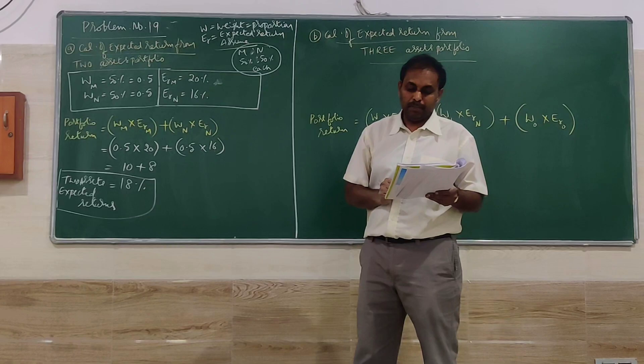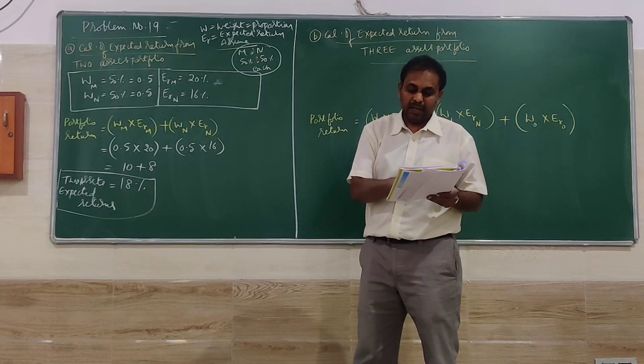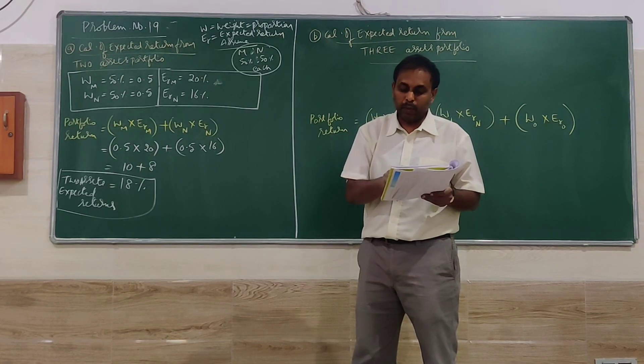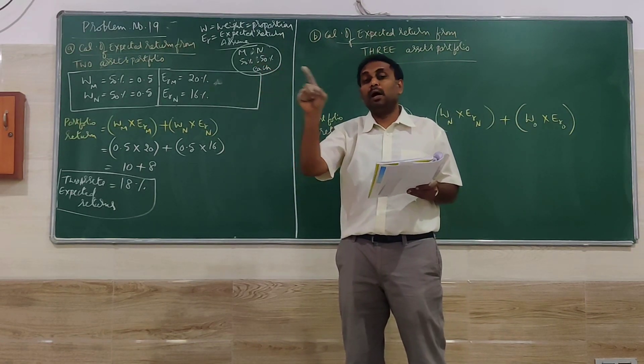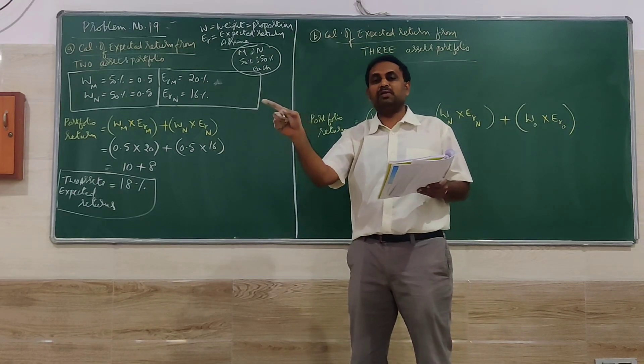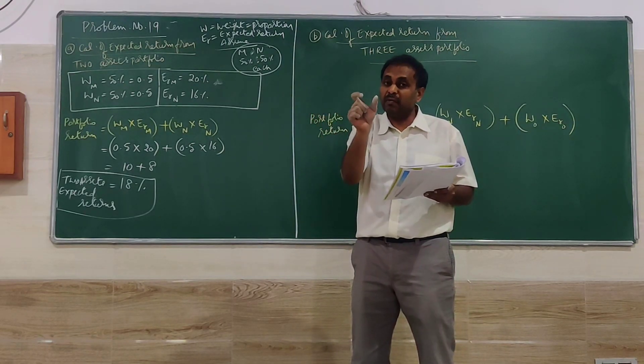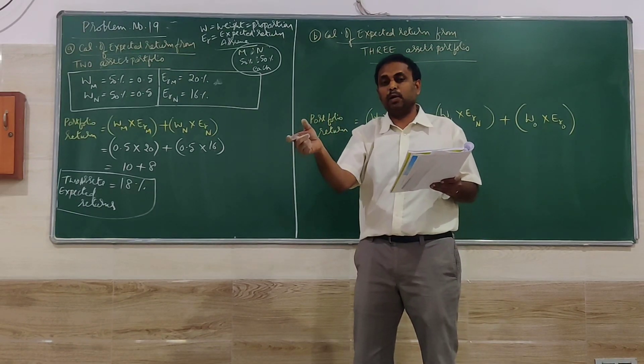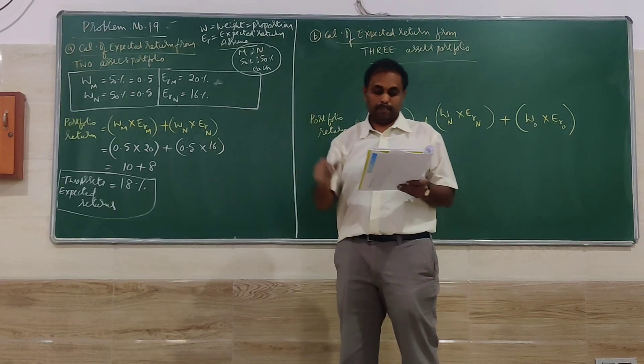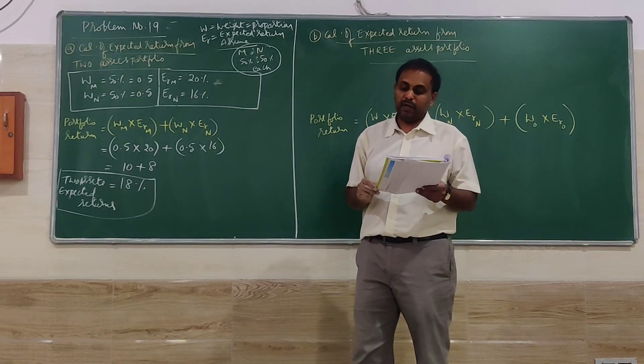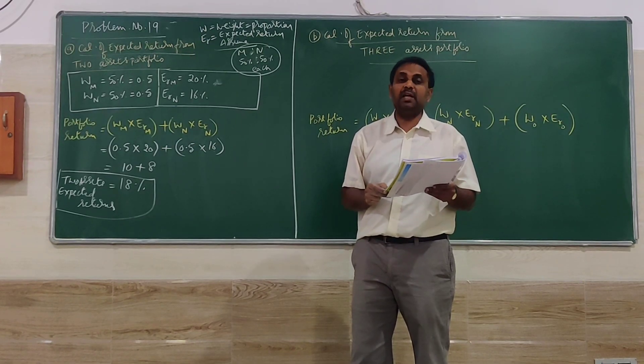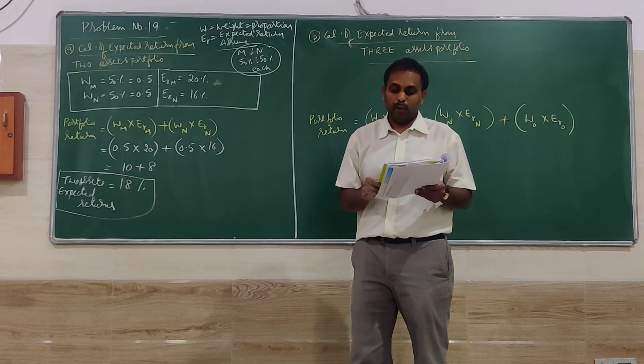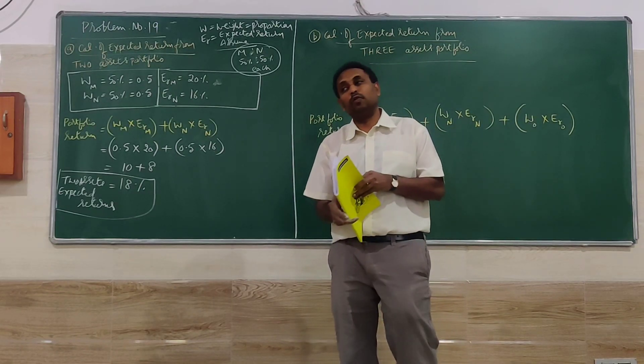Partly selling the investment in N company by 20% of the total investment. Underline the word 'total investment.' So not the investment in N company itself—20% of the total investment. The expected rate of return from O company is 22% for the same holding period. What will be the return from the 3-asset portfolio?